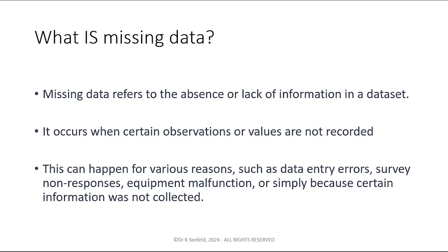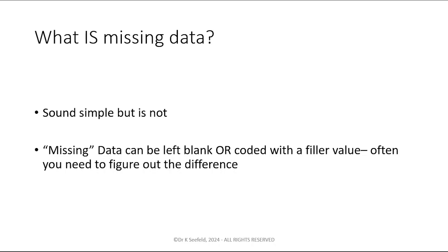What exactly is missing data? It's not such a simple answer. Missing data refers to the absence or lack of information in a dataset and occurs when certain observations or values are not recorded. This can be for various reasons such as data entry errors, survey non-responses, equipment malfunctions, or simply because certain information was not collected.